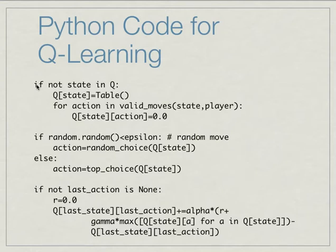But basically it's just like the Skittles agent. So we have, if the state's not in Q, we start off a table and we set all the values to zero. Sometimes we might choose a random move and sometimes we might want to. And we'll see why that may be important. But most of the time we might choose the top choice, the top value. And if it's not the last action, then the reward is none. And we update the Q based on the equation that we just did.